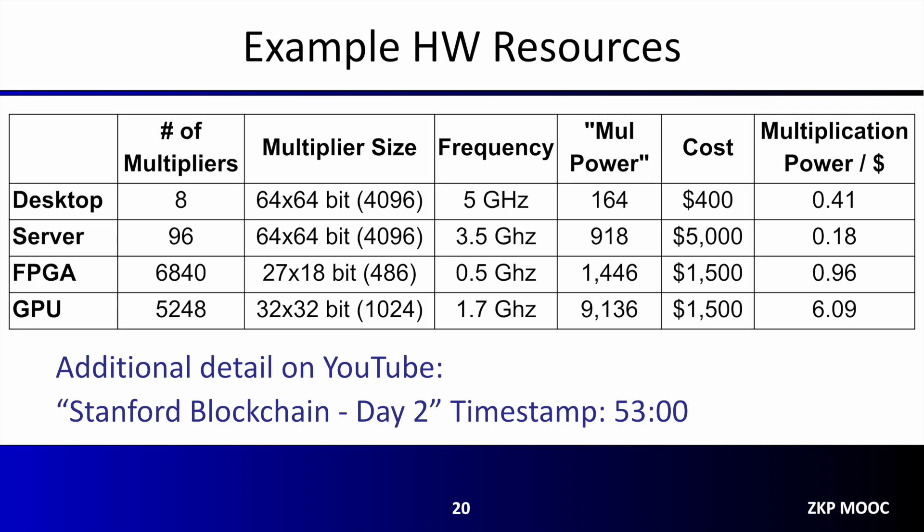To illustrate this concept more concretely, this slide shows a table with four hardware platforms: a desktop CPU, a server CPU, an FPGA, and a GPU. The desktop CPU contains 8 cores, each with a 64×64-bit multiplier operating at 5 GHz, giving an estimated multiplication power of approximately 164. The server CPU contains 96 cores each with a multiplier but running at a lower frequency, yielding a multiplication power of around 900 — five times that of the desktop processor. The FPGA has substantially more multipliers — over 6,000 compared to the 96 on the server — but with reduced multiplier size and frequency, resulting in less than twice the multiplication power of the server CPU.